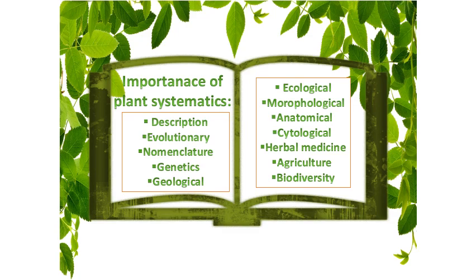The taxonomist can give correct identification of the pest species, which is vital for its effective control. The correct identification of a particular vector is vital for bringing it under control by targeting its transmitter. As for biodiversity — the variety of organisms available — by knowledge of plant systematic one knows about this variety of organisms, and as far as conservation is concerned, plant systematic plays a very vital role.